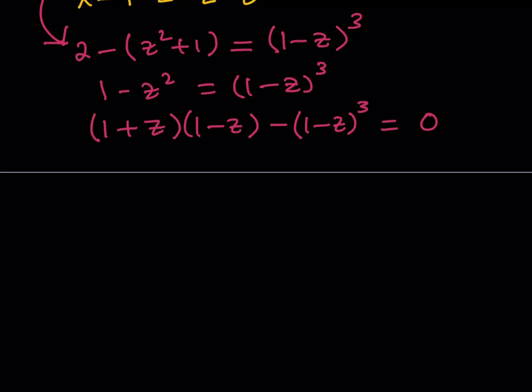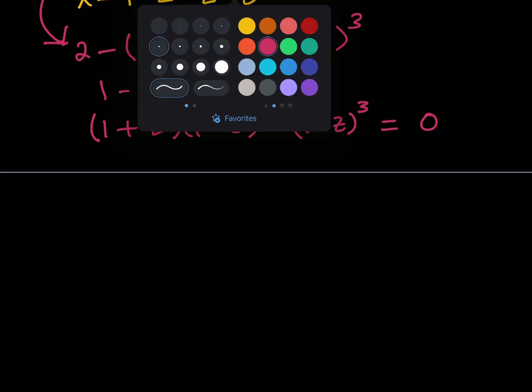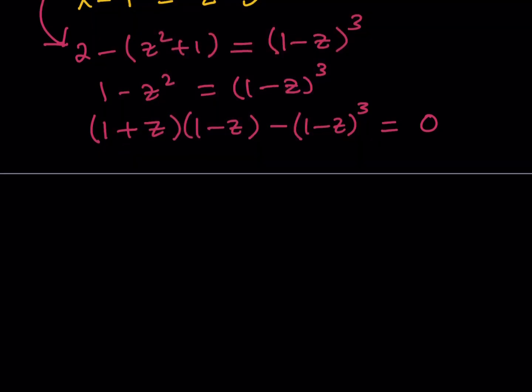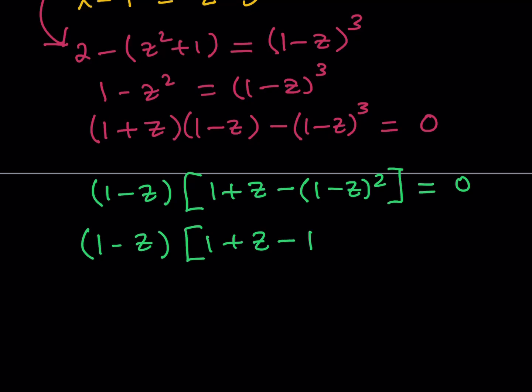Great. Now, notice that 1 minus z is a common factor. So what I can do is I can basically just take that out. So if I do take out a 1 minus z here, then I should be getting something like this: 1 plus z from here, 1 plus z minus, since I took out one of the 1 minus z's, I have 1 minus z quantity squared left. And this whole thing is equal to 0. Now, let's go ahead and simplify inside the parentheses.